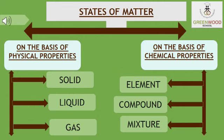Matter around us exists in different states. These states of matter arise due to variation in the characteristics of the particles. States of matter can be classified on the basis of physical properties — as solid, liquid, and gas — and two more states are plasma and Bose-Einstein condensate. According to chemical properties, they are elements, compounds, and mixtures. In this chapter, we are going to study the three states: solid, liquid, and gas only.